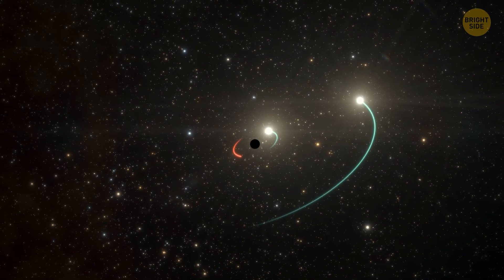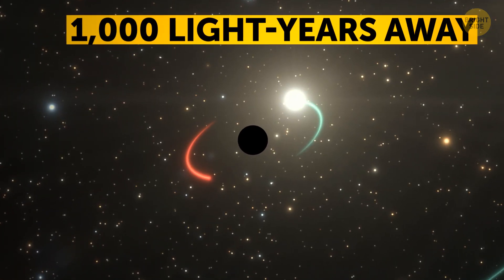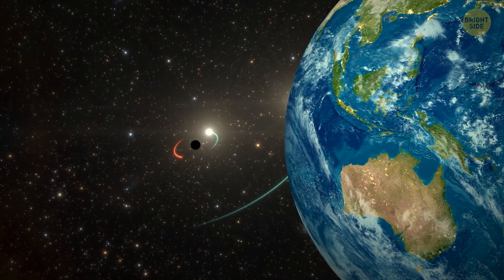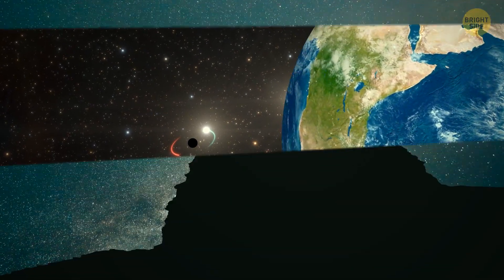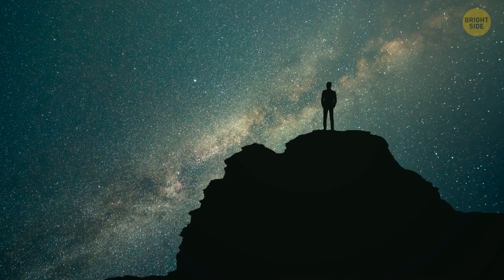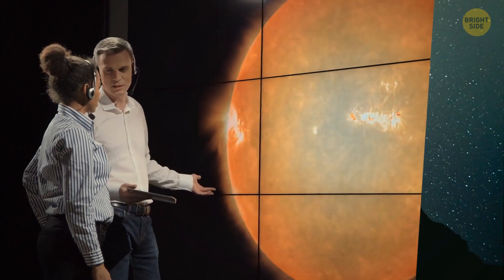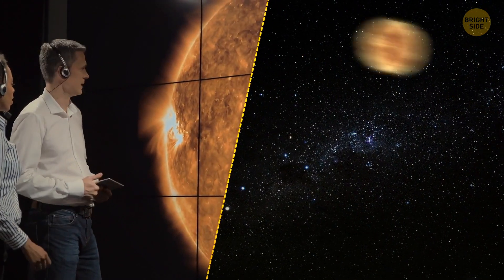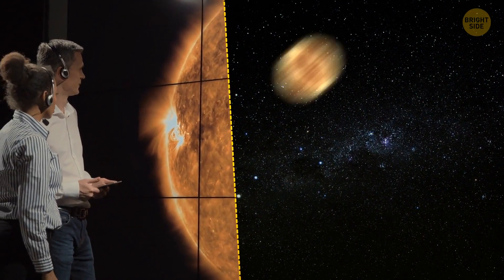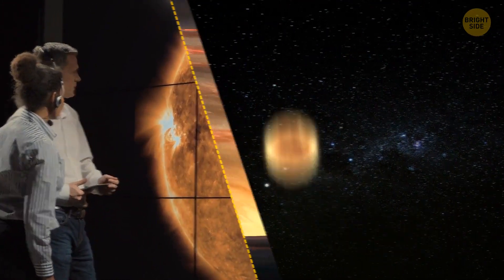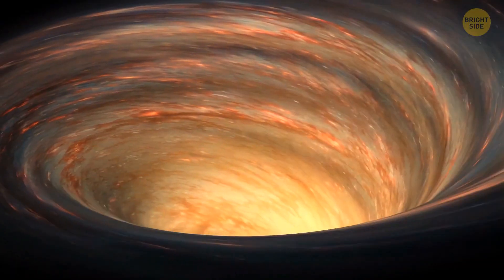The nearest black hole to the Earth was spotted 1,000 light-years away, just around the corner in galactic terms. It's in a star system you can see with an unaided eye. Scientists found it when they noticed a star behaving weirdly. It was a giant rotating like crazy. They guessed it must have a powerful gravitational companion.